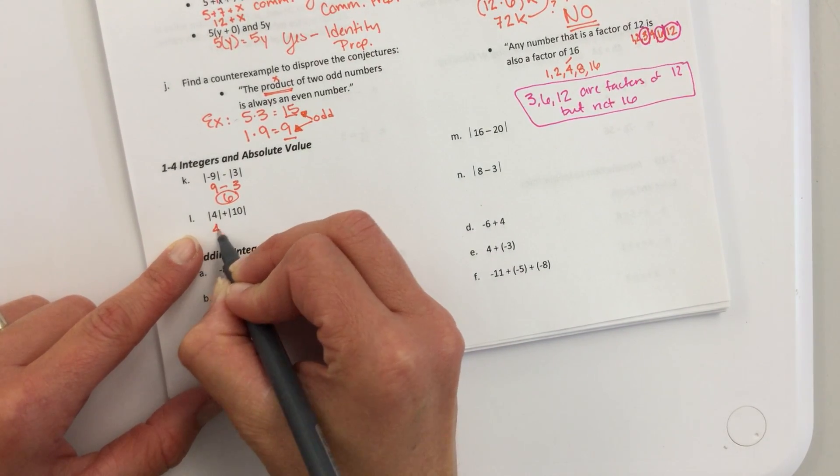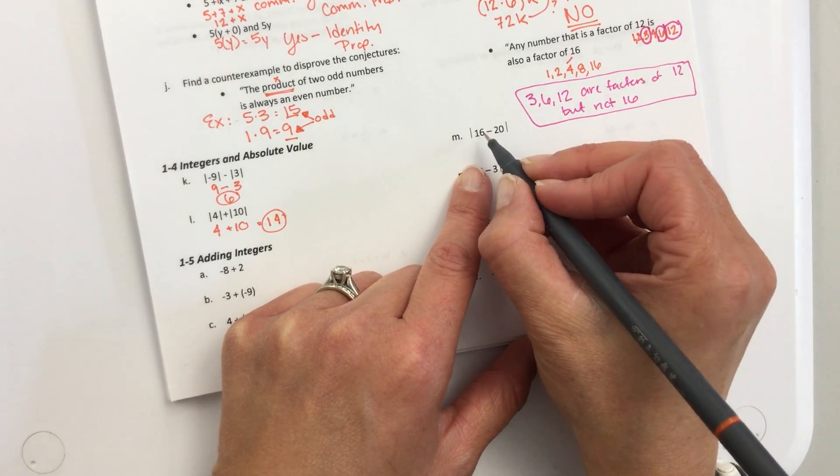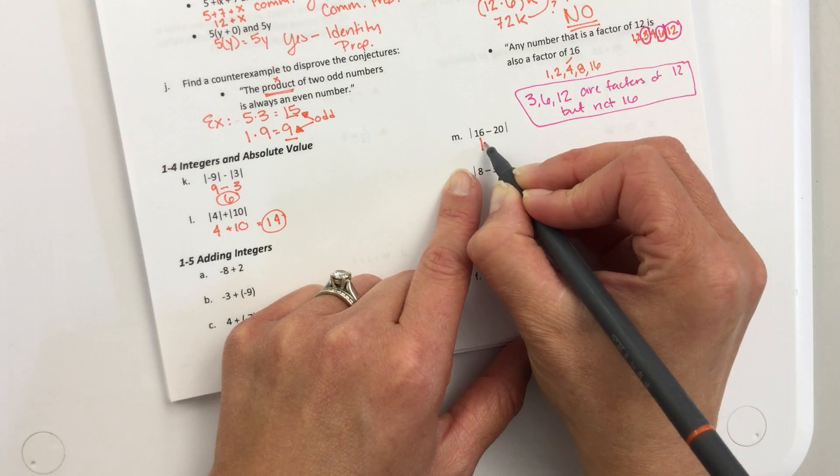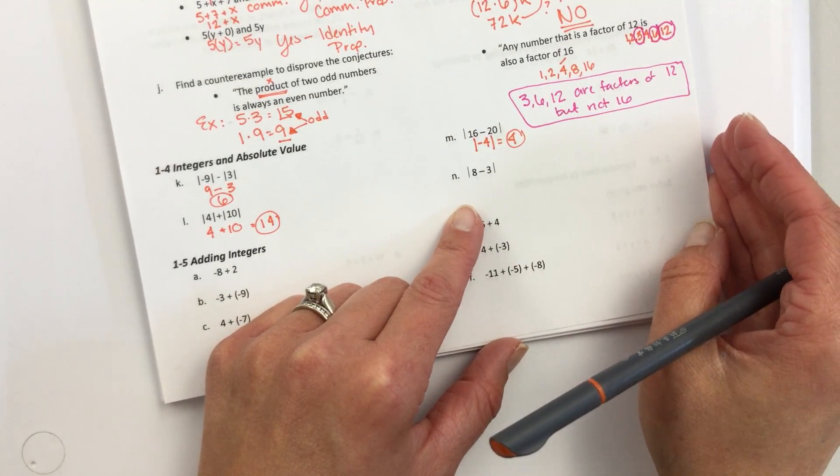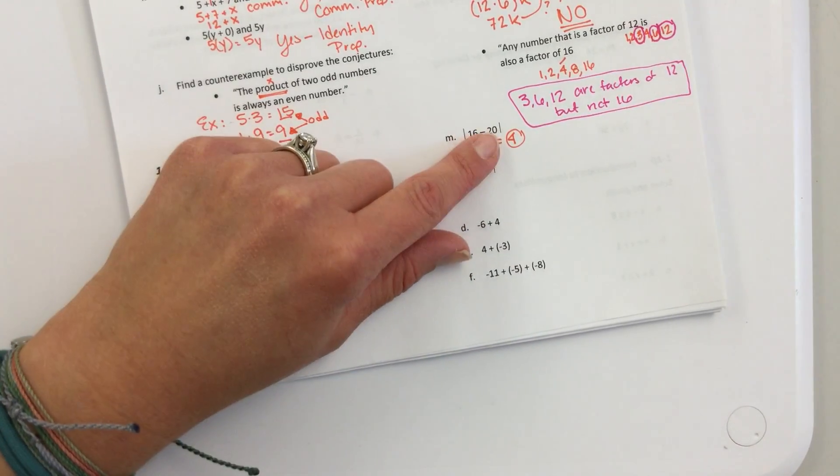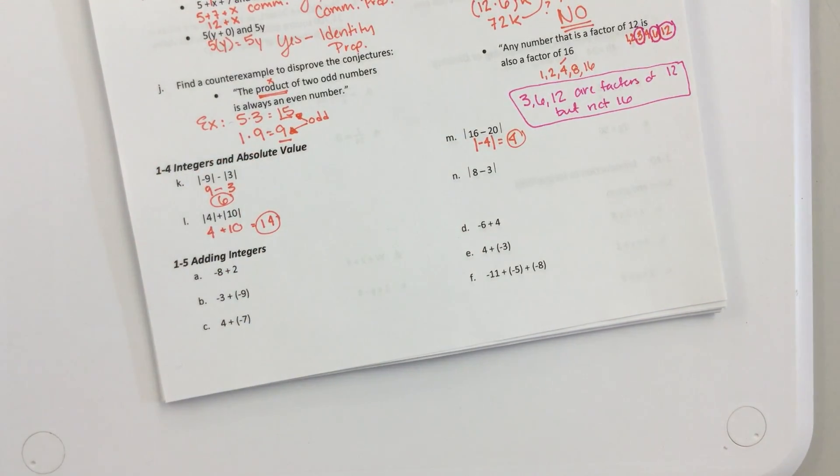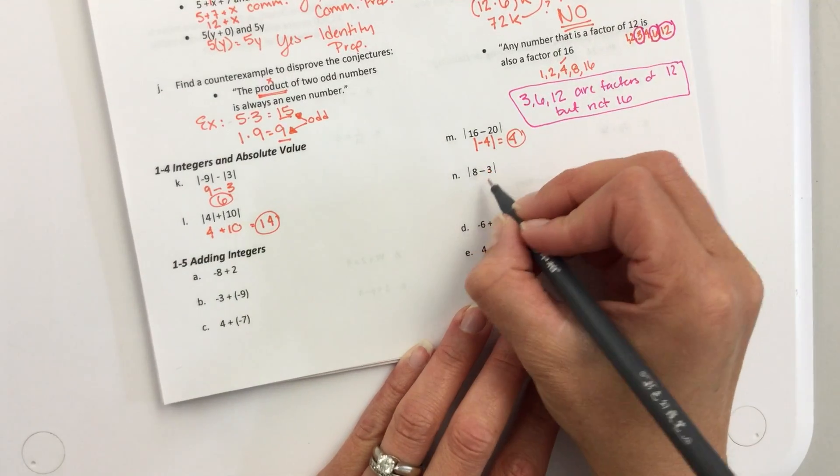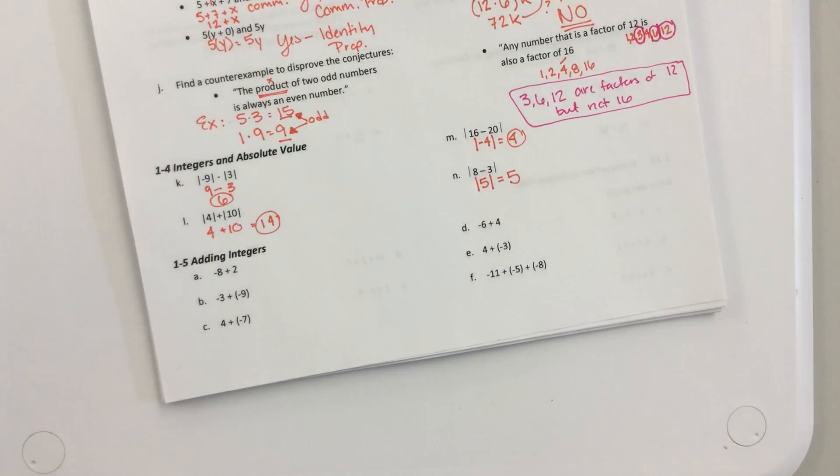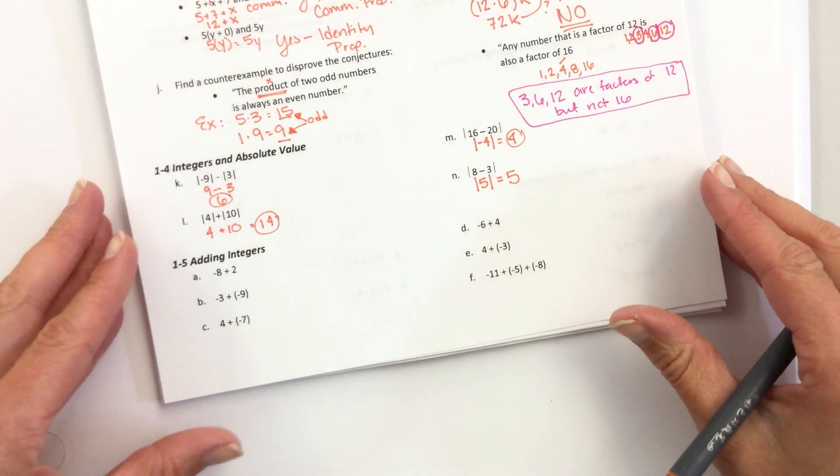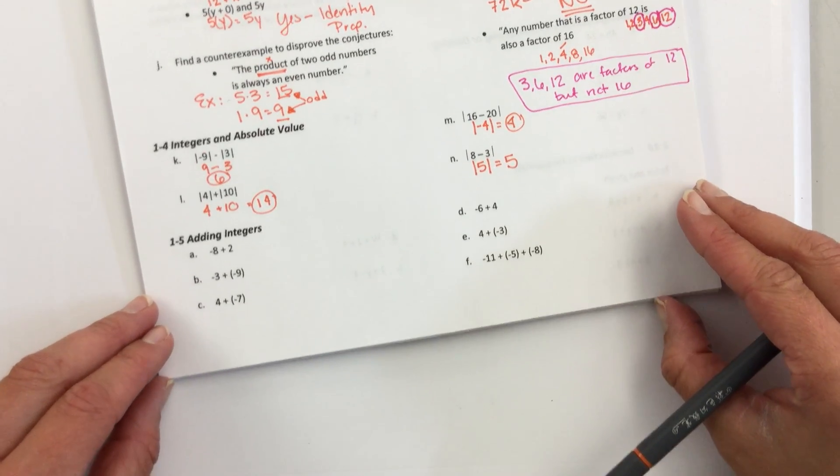Okay. What's the absolute value of four? Four. What's the absolute value of ten? What's ten plus four? Fourteen. Okay. Now, inside, you have to treat it like parentheses. You do this first. So what is sixteen minus twenty? Negative four. What's the absolute value of negative four? Four. Okay. Eight minus three is? Five. Yes, the absolute value of five is? Five. Five. Five. It never, the absolute value will never turn something negative. So then what's the point if you change it? The additive inverse is the opposite of it.